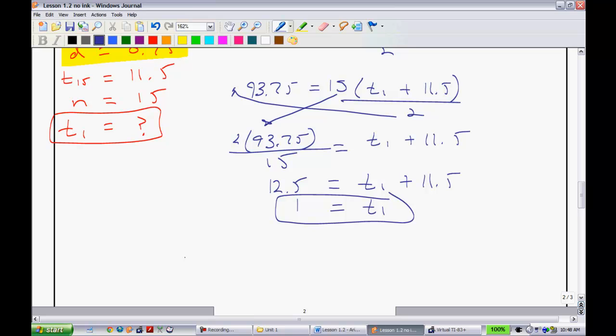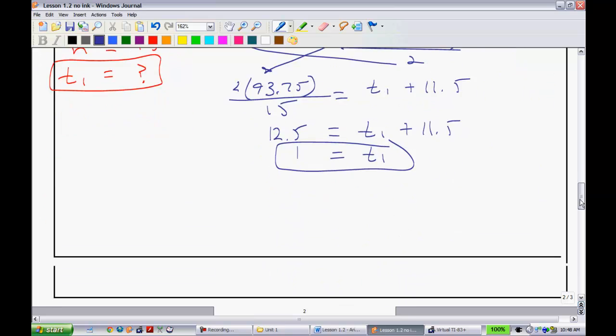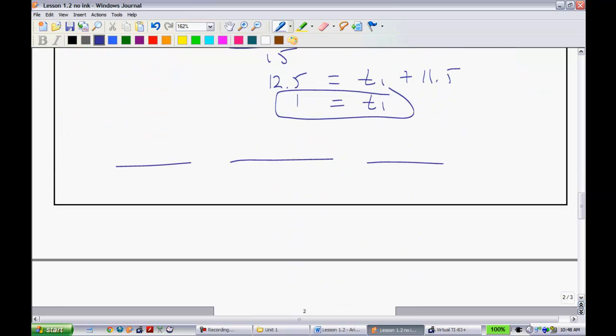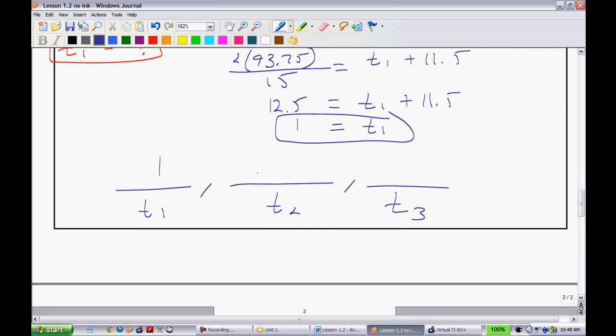Very good. Now, since they were asking, going back to the question here, determine the first three terms. We know that the first term is 1. And we know the common difference was .75. So, this one has to be 1.75 and 2.5. Not too shabby.